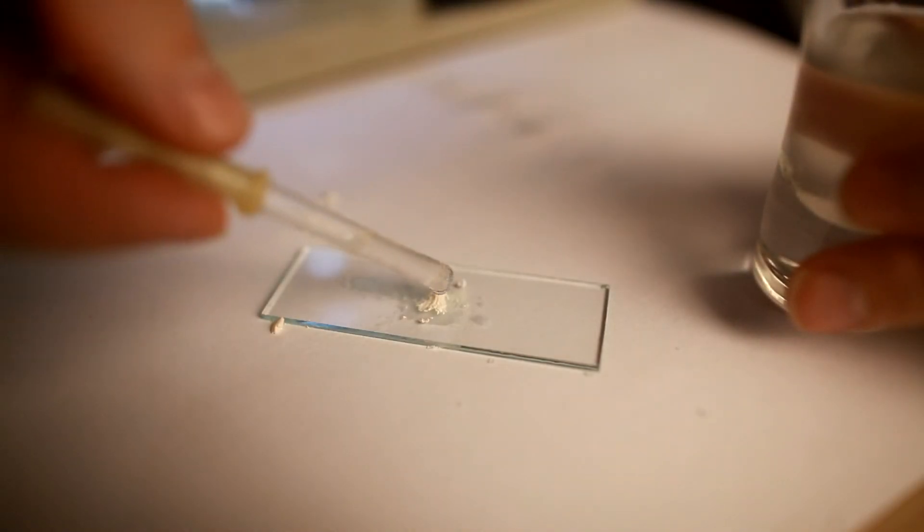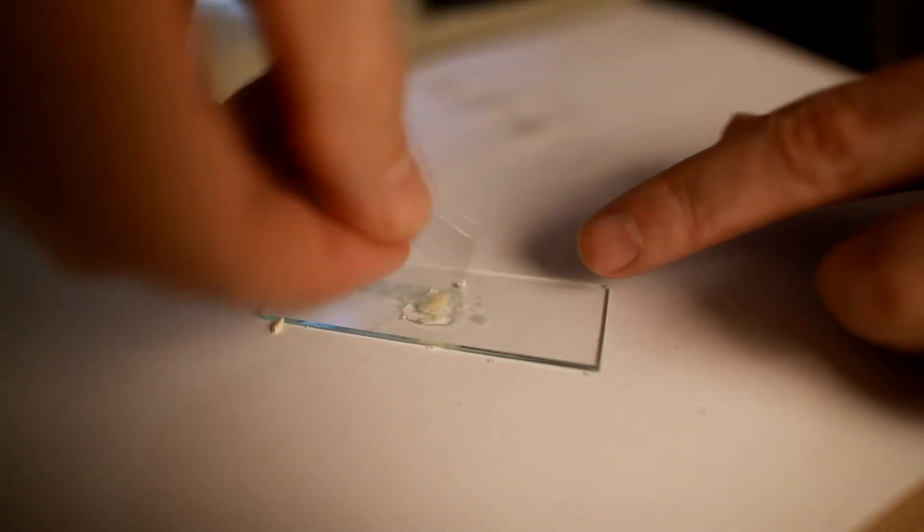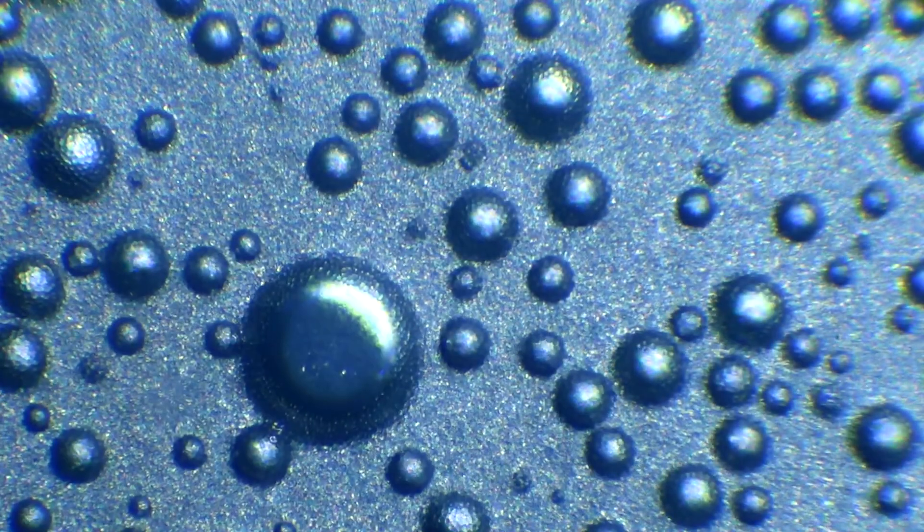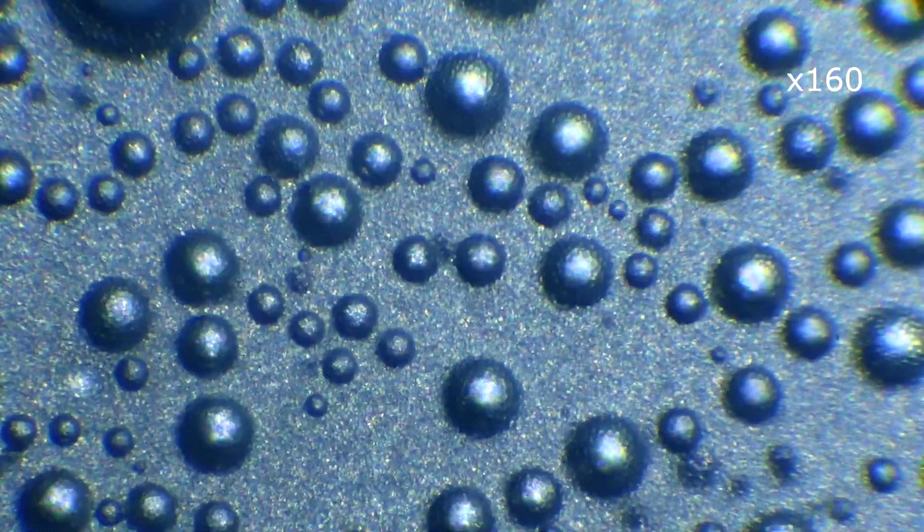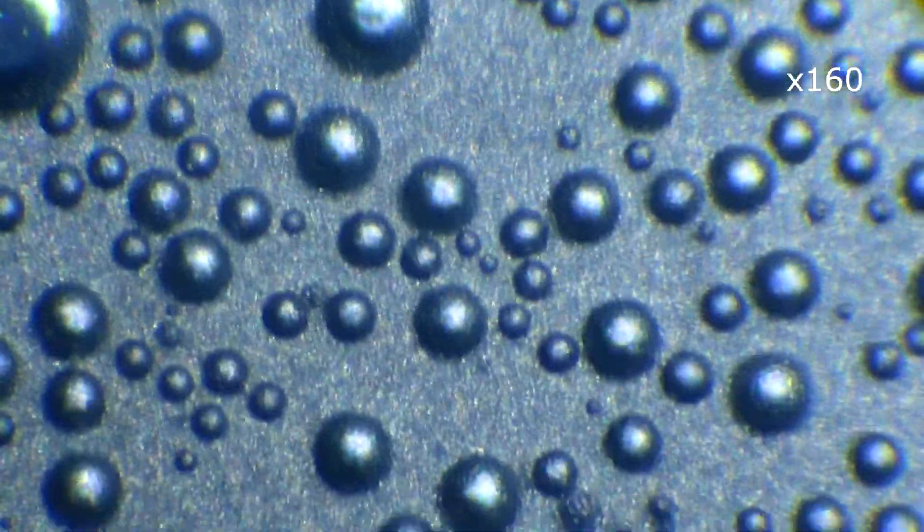We add sugar liquid to dry yeast. Then even with a small magnification you can see the active release of carbon dioxide and the formation of bubbles.